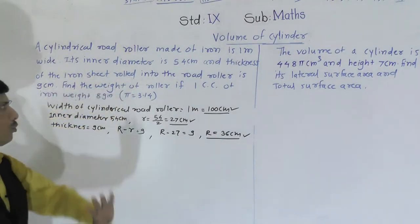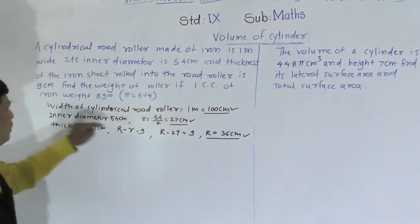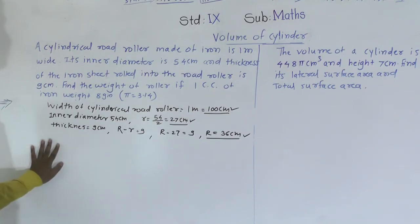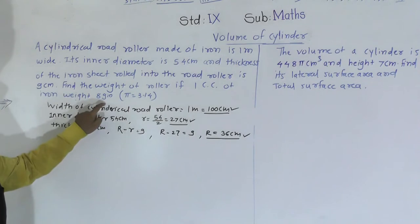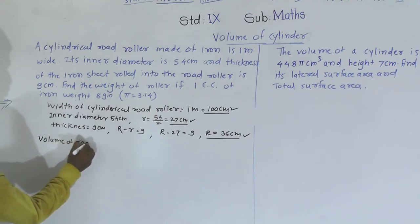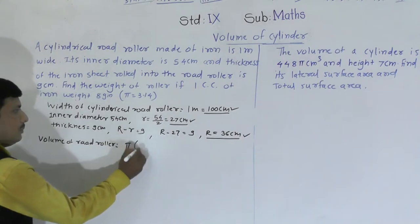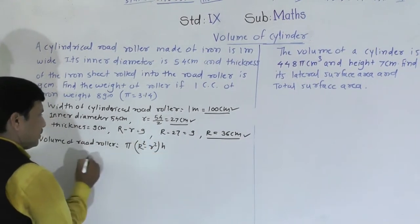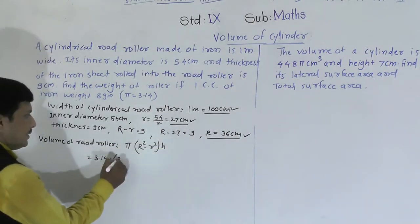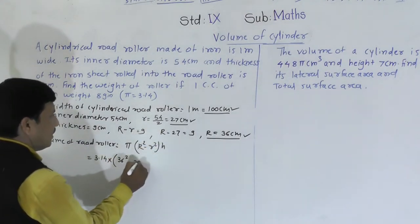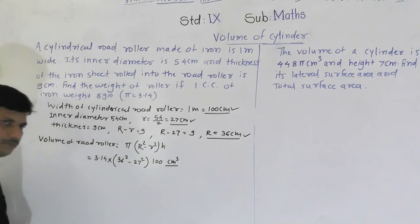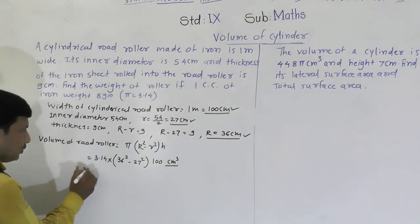We need to find the weight of the road roller. First, we find the volume of the road roller and then multiply by 8 grams, converting to kilograms. The volume of a hollow cylinder is: V = π(R² − r²) × h = 3.14 × (36² − 27²) × 100 cubic centimeters.